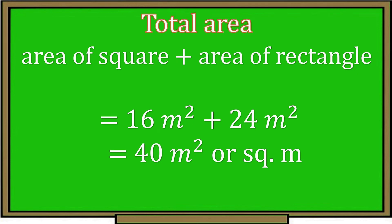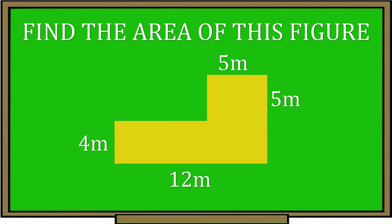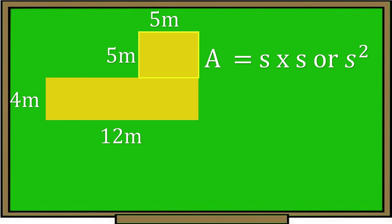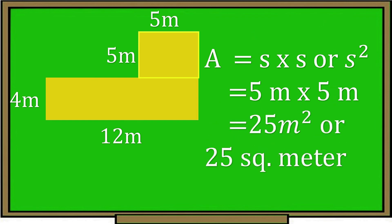Now let's solve an activity. Get a ball pen and paper and solve the area of these irregular figures with the following dimensions: 5 meters, 5 meters, 4 meters, and 12 meters. First, divide the figures into squares and rectangles, then solve the area of the square. Area equals side times side, or S squared. The measurement of the side is 5 meters times 5 meters, so the answer is 25 square meters.